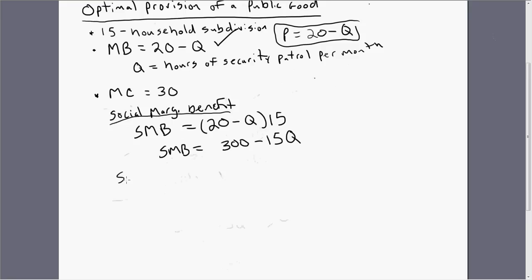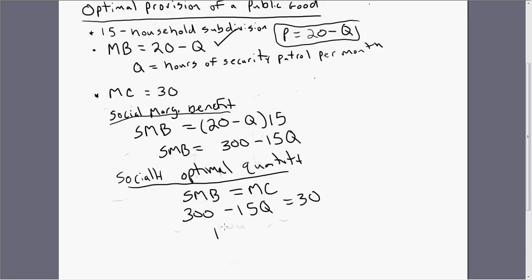All right, the next thing is let's find the socially optimal quantity of the security patrol. So, to solve that, set the social marginal benefit equal to the marginal cost. 300 minus 15 times Q equals 30. Or 15Q equals 270. And that will simplify down to just 18. So, this subdivision should hire 18 hours worth of security patrol for the month. That is what is socially optimal.